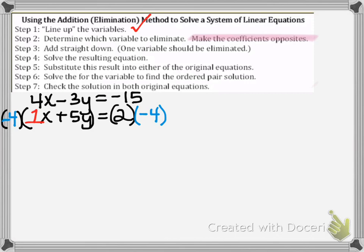So you'll see that after we multiply the second equation by negative 4, when our x terms line up, we'll have opposite coefficients. Okay, so our first equation remains unchanged. It's still 4x minus 3y equals negative 15.